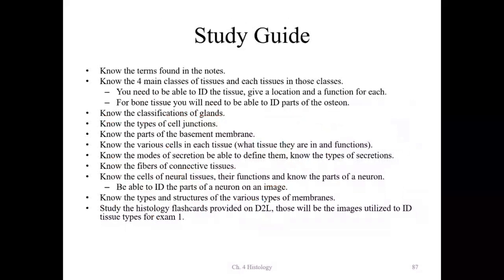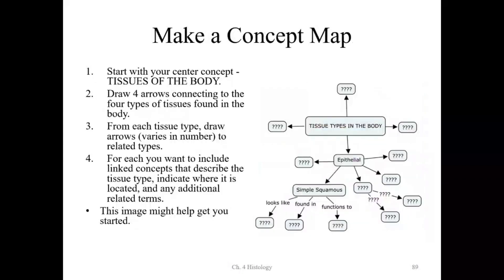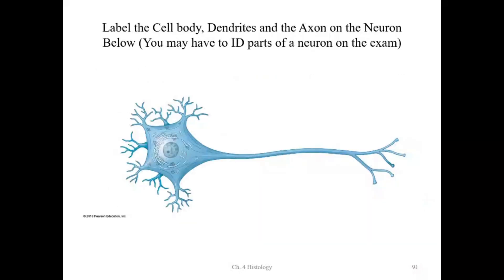That wraps up this section. Use the study guide and concept map provided to help identify the different tissue types, starting with epithelia. Map out the different tissues — their locations, functions, and what they look like under a microscope. Locations and functions will definitely be part of your test. Good luck on your exam!